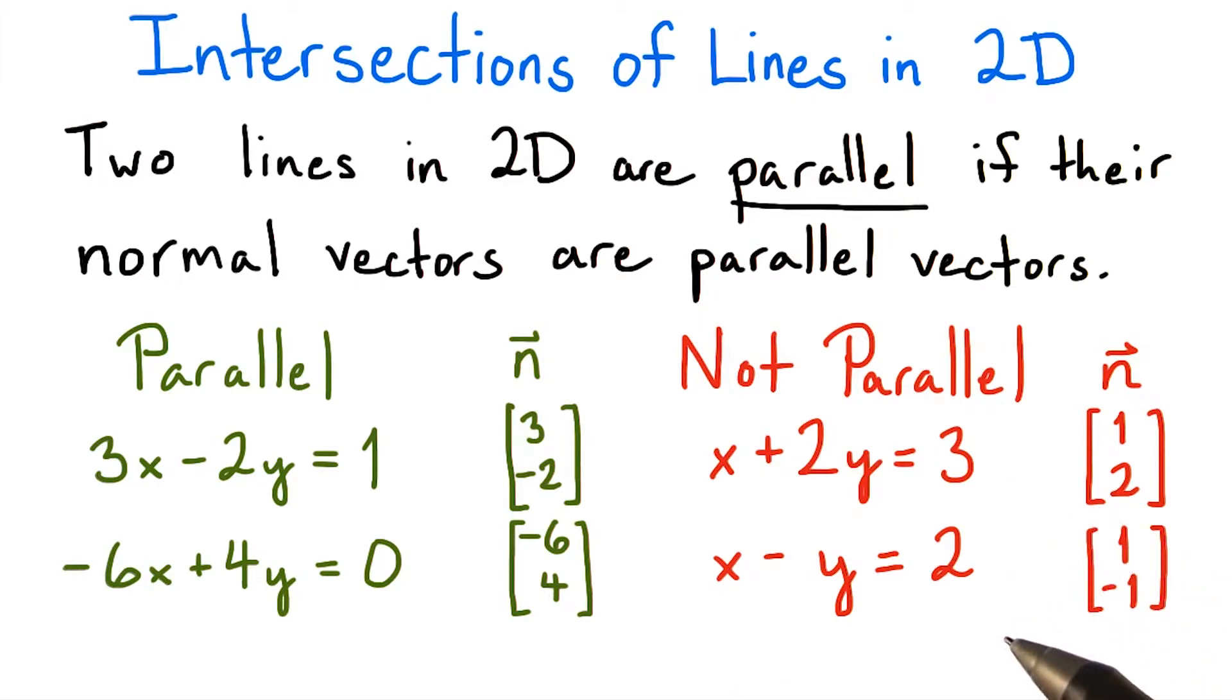Whereas these two lines are not parallel because their normal vectors are not parallel. It may seem strange that we are using normal vectors in our definition instead of direction vectors. In two dimensions, the definitions are equivalent.